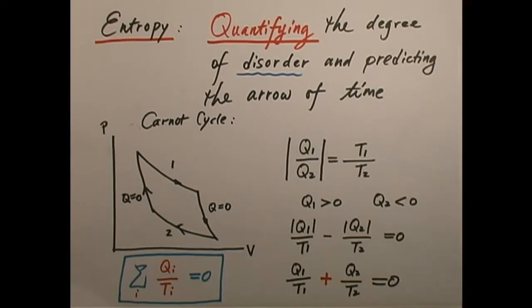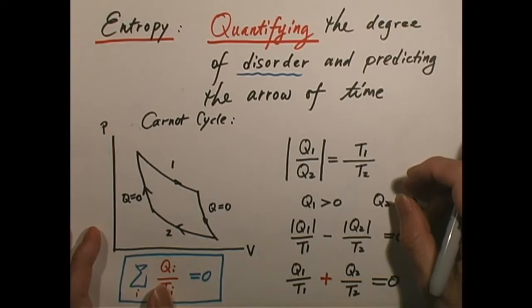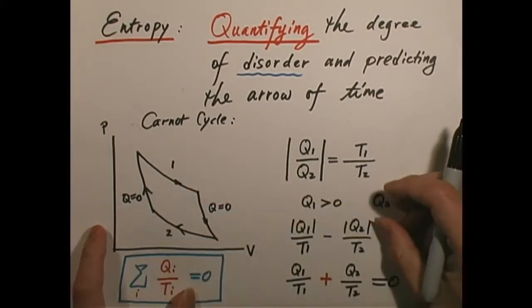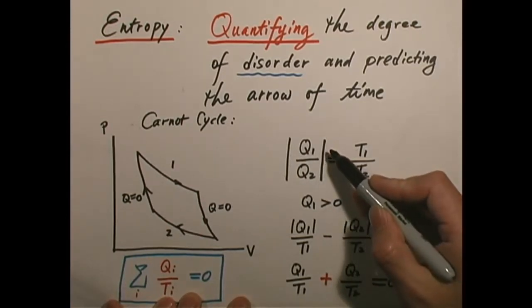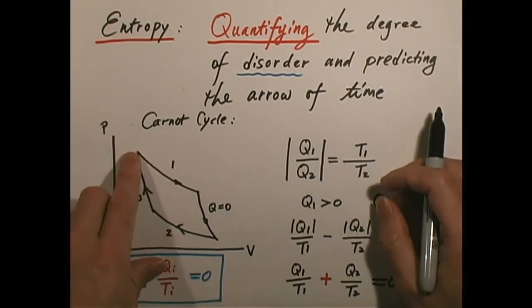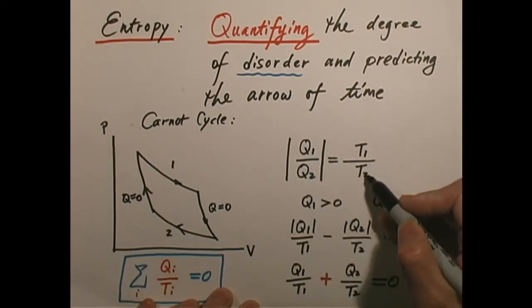And then we can look at the microscopic or statistical root of the concept of entropy. We start again with a Carnot cycle. As you know, a Carnot cycle is made of two isothermal lines and two adiabatic lines on a PV diagram. We have proven that q1 over q2 equals T1 over T2. Here, this first isothermal process — the isothermal expansion — is called step one, and this isothermal contraction is called step two.